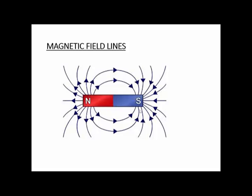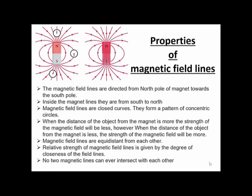The second important property: magnetic field lines always come out of the north pole and go inside towards the south pole. The magnetic field lines are directed from the north pole of the magnet towards the south pole. Look at this — all the magnetic field lines are going from north to south.